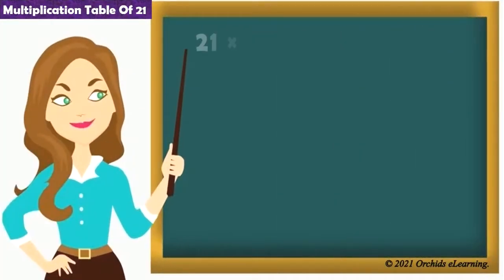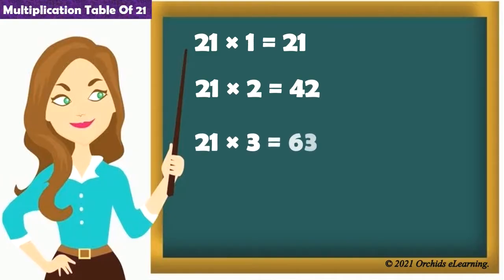21 1s are 21. 21 2s are 42. 21 3s are 63. 21 4s are 84. 21 5s are 105.